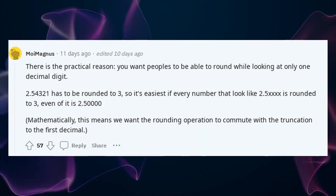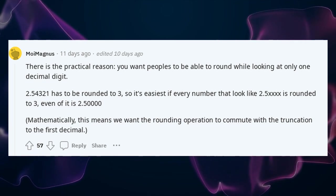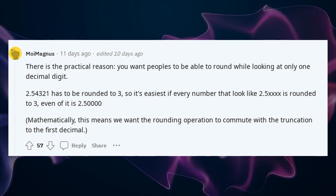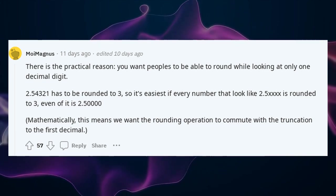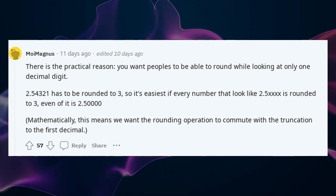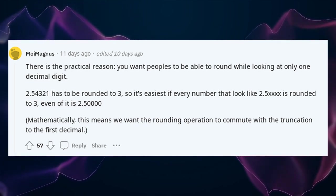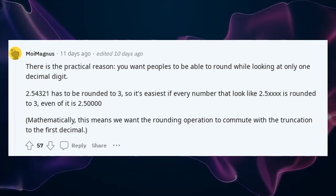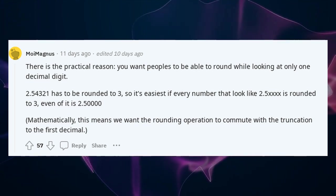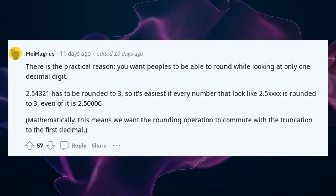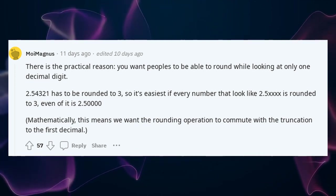There is a practical reason: you want people to be able to round while looking at only one decimal digit. 2.54321 has to be rounded to 3, so it's easiest if every number that looks like 2.5x is rounded to 3, even if it is 2.50000. Mathematically, this means we want the rounding operation to commute with truncation to the first decimal.